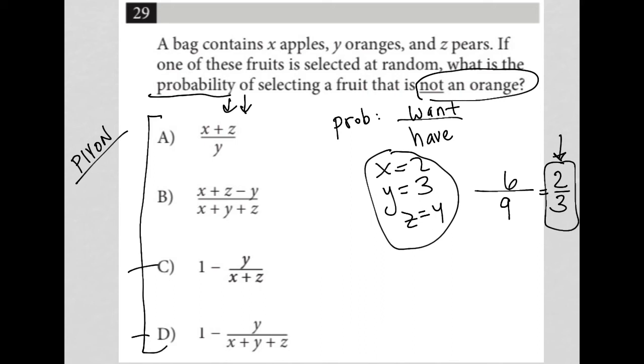So choice A is X plus Z over Y, which would be 6 over 3, which is 2. So that's not 2 thirds. That's out.